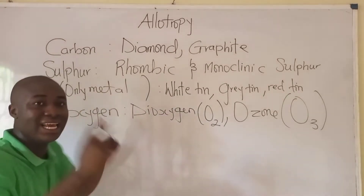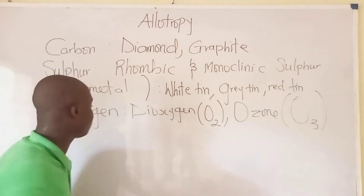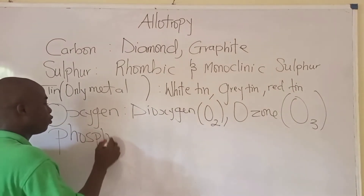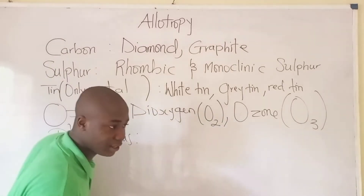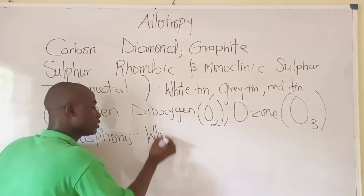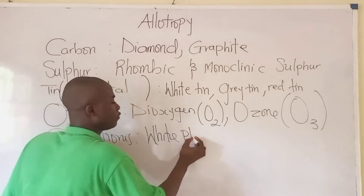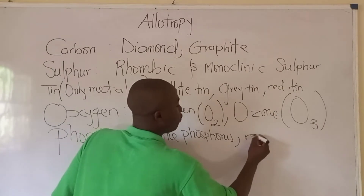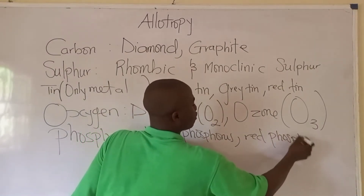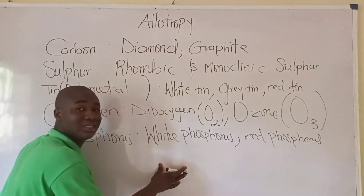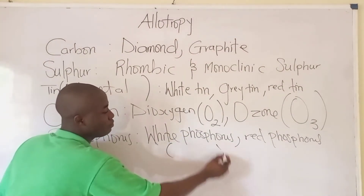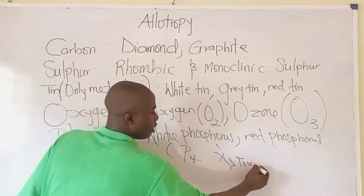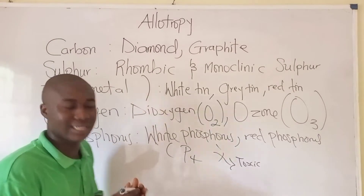Oxygen is another element that exhibits allotropy, and it must be noted that tin is the only metal that exhibits allotropy. Now, phosphorus also exists in different allotropic forms. We have white phosphorus and red phosphorus. White phosphorus has the symbol P4, and white phosphorus is toxic.